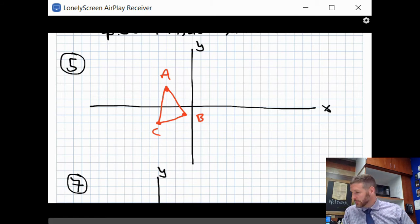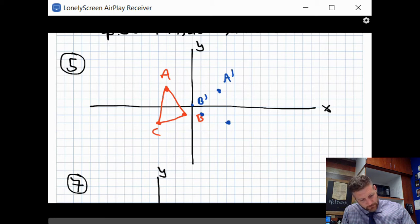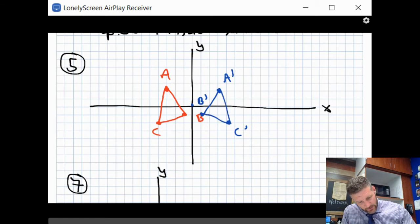Go ahead and do our image in blue now. So now we have A prime is over 3, up 2. And remember, that's not from another point. If it gives it as a coordinate, that's from the origin, starting here in the center. So that's A prime. Now B prime is over 1, down 1. And C prime has gone to 4, negative 2. Go ahead and connect our little triangle. So there's our new friend.